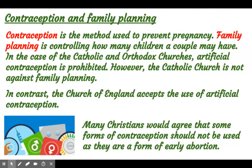When it comes to contraception and family planning, the Christian church has two very different views. Contraception is the method used to prevent pregnancy, and that can be natural or artificial contraception — be careful to specify which one you're talking about. Natural contraception is allowed, for example, in the Catholic Church, whereas artificial contraception isn't. Family planning is controlling how many children a couple may have. The Catholic Church doesn't prohibit family planning — it just prohibits artificial contraception — and that's the same in the Orthodox Church as well.